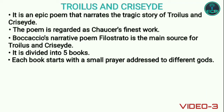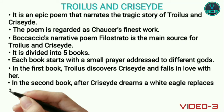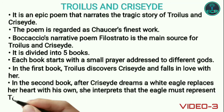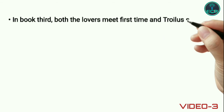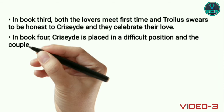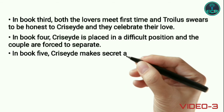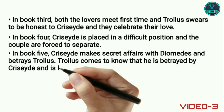In the first book, Troilus discovers Cressida and falls in love with her. In the second book, after Cressida dreams that a white eagle replaces her heart with his own, she interprets that the eagle must represent Troilus, and soon they start corresponding with each other. In book three, both lovers meet for the first time and Troilus swears to be honest to Cressida, and they celebrate their love. In book four, Cressida is placed in a difficult position and the couple are forced to separate. In book five, Cressida makes secret affairs with Diomedes and betrays Troilus. Troilus comes to know he is betrayed by Cressida and is killed in battle.